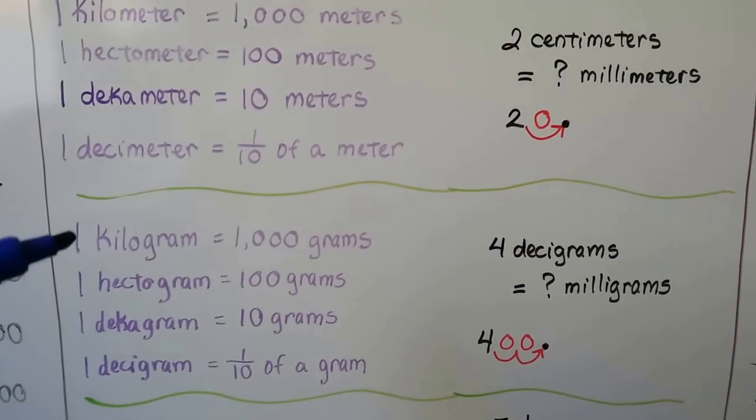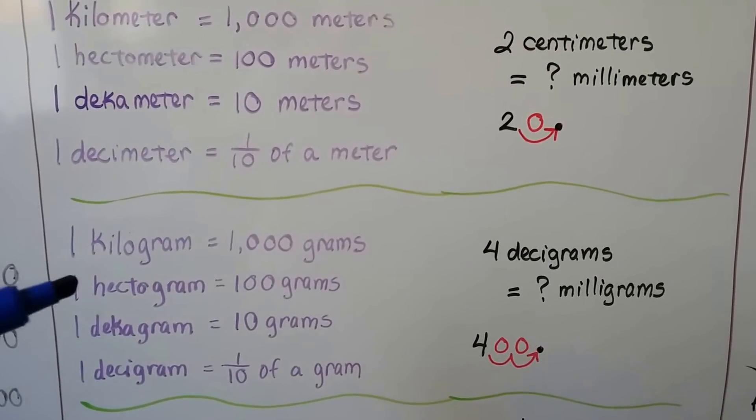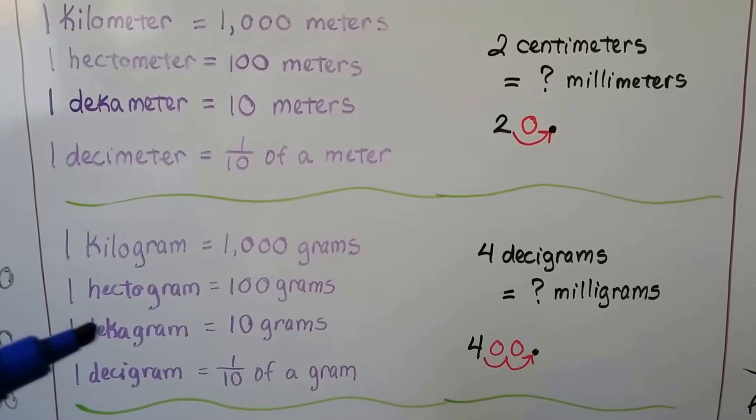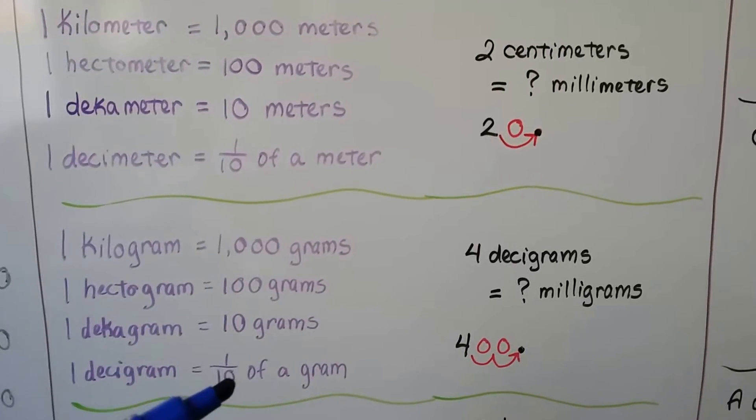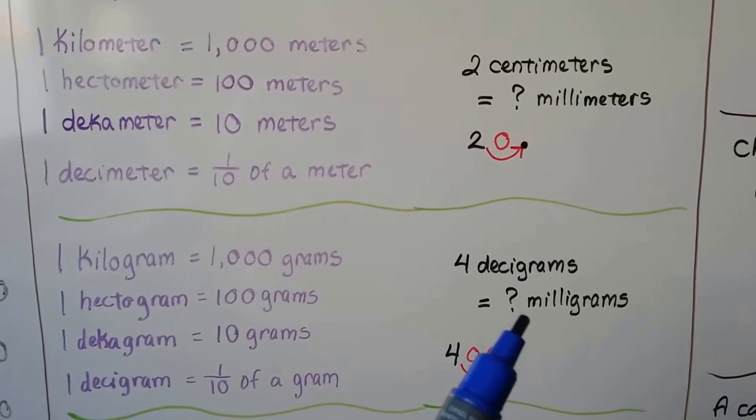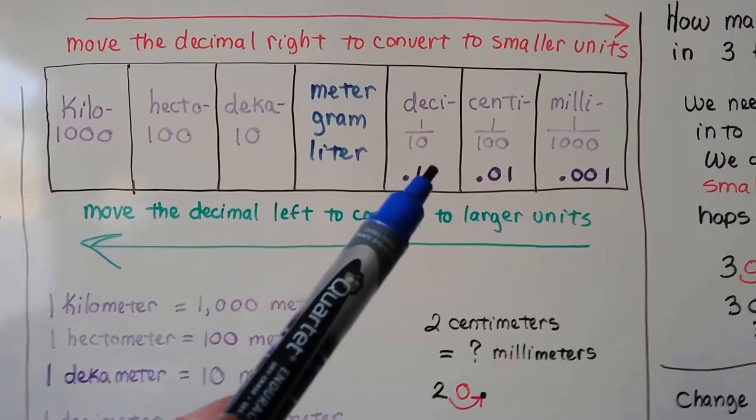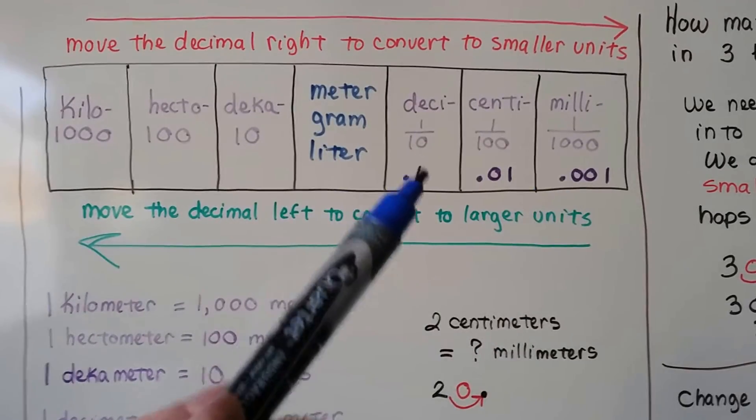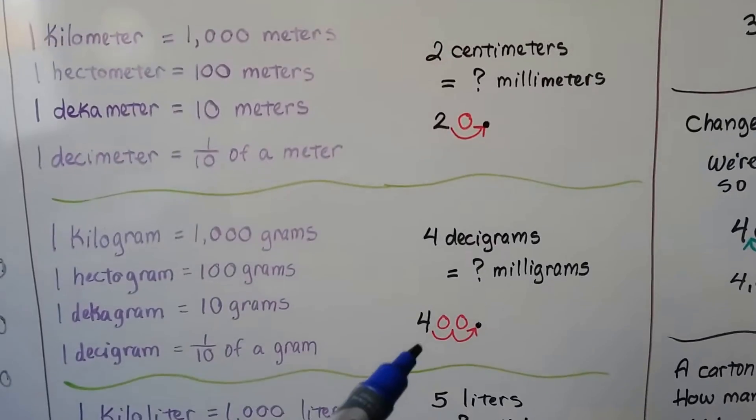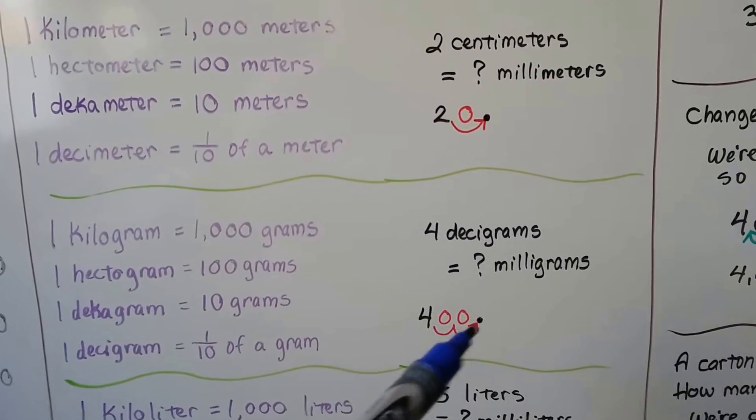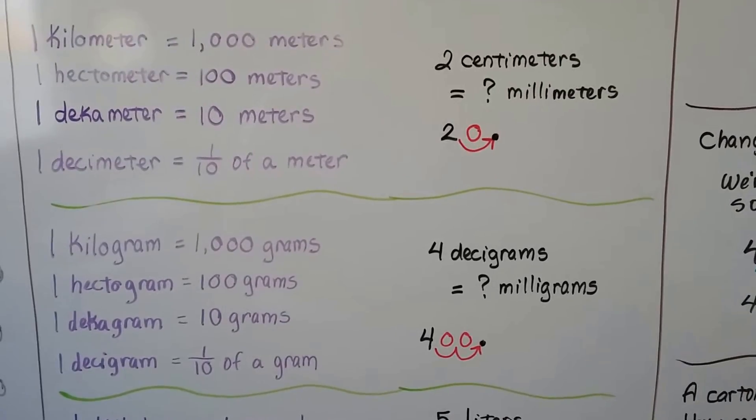For grams, one kilogram is one thousand grams. One hectogram is one hundred. One decagram is ten. And one decigram is one tenth of a gram. If we have four decigrams and we want to figure out how many milligrams it is, we look at the deci. Here's milli. We're going to go two hops. One, two. Because we're going to a smaller unit, we do two hops to the left. We put zeros as placeholders. Four decigrams is equal to 400 milligrams.